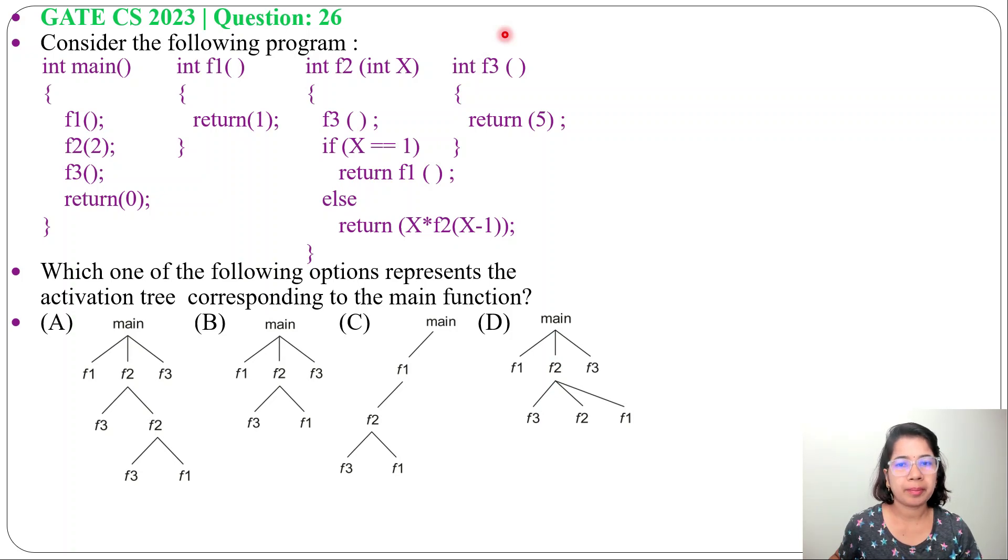Let's solve one previous question of compiler design. This question was asked in GATE CS 2023, question number 26. Consider the following program. One main program with three functions, F1, F2, and F3 are given.